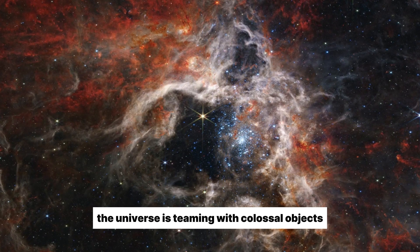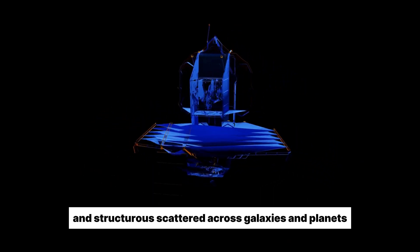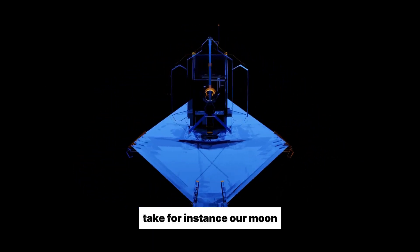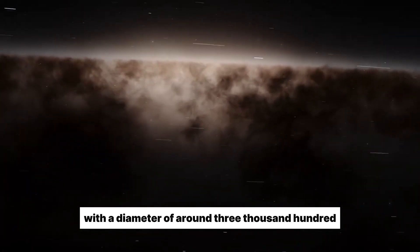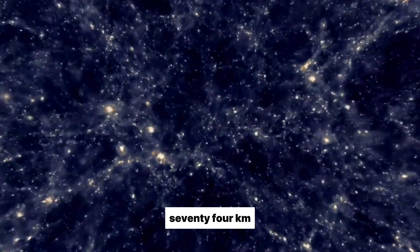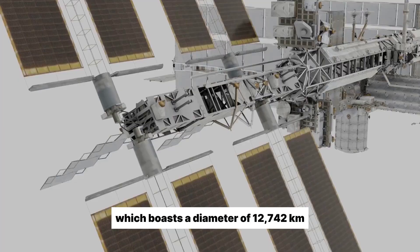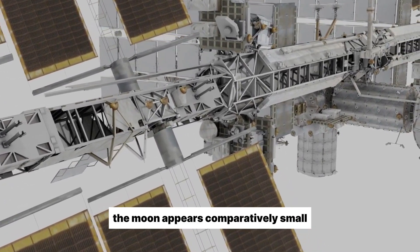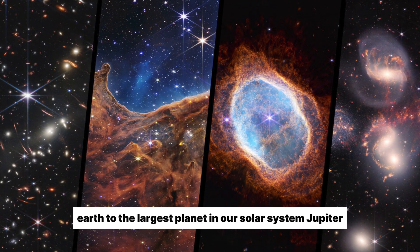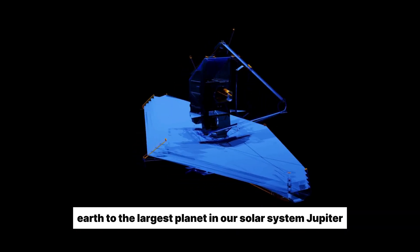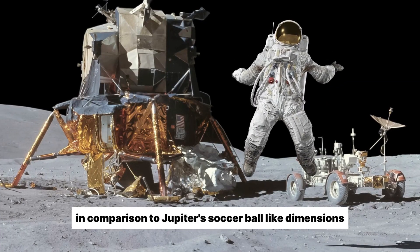The universe is teeming with colossal objects and structures scattered across galaxies and planets. Take, for instance, our Moon, a behemoth celestial body with a diameter of around 3,174 kilometers. However, when compared to our home planet Earth, which boasts a diameter of 12,742 kilometers, the Moon appears comparatively small. If we were to further compare Earth to the largest planet in our solar system, Jupiter, Earth would seem no larger than a ping-pong ball in comparison to Jupiter's soccer-ball-like dimensions, with a diameter of approximately 140,000 kilometers.